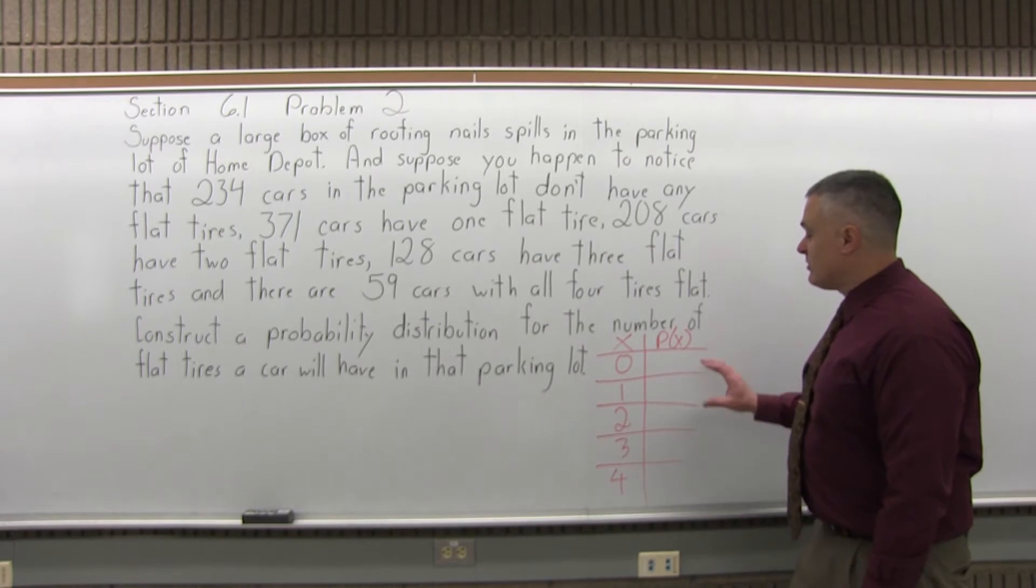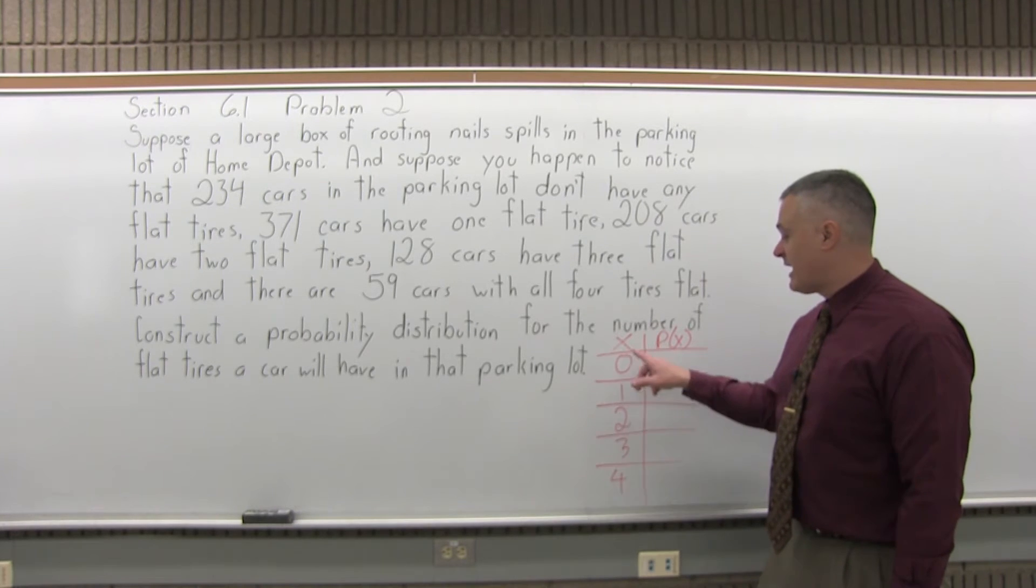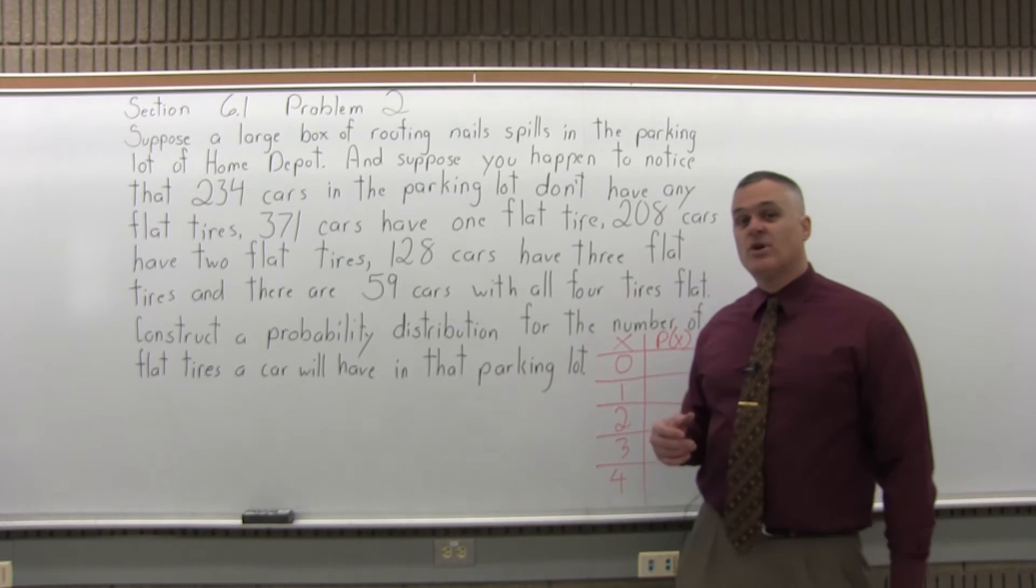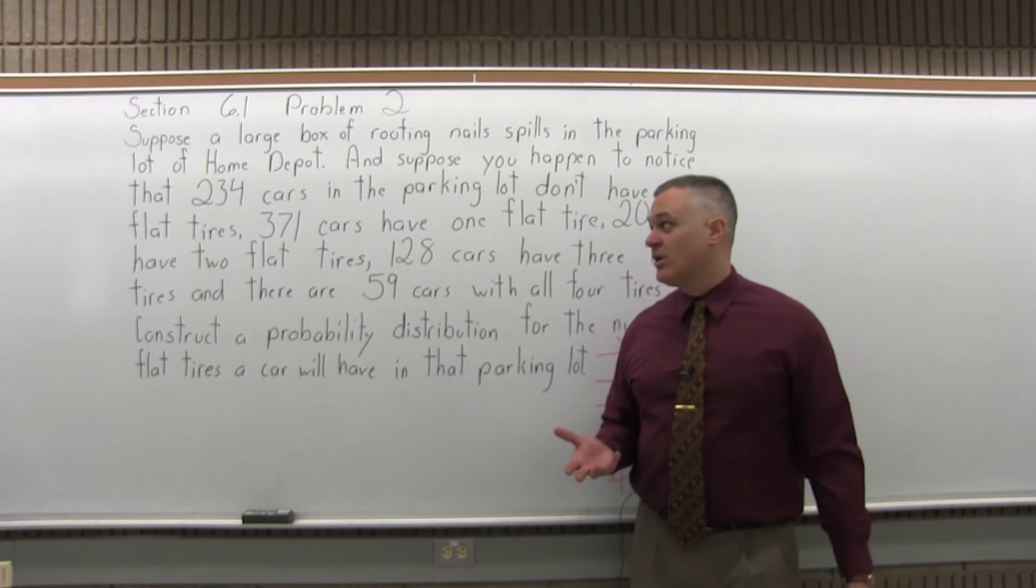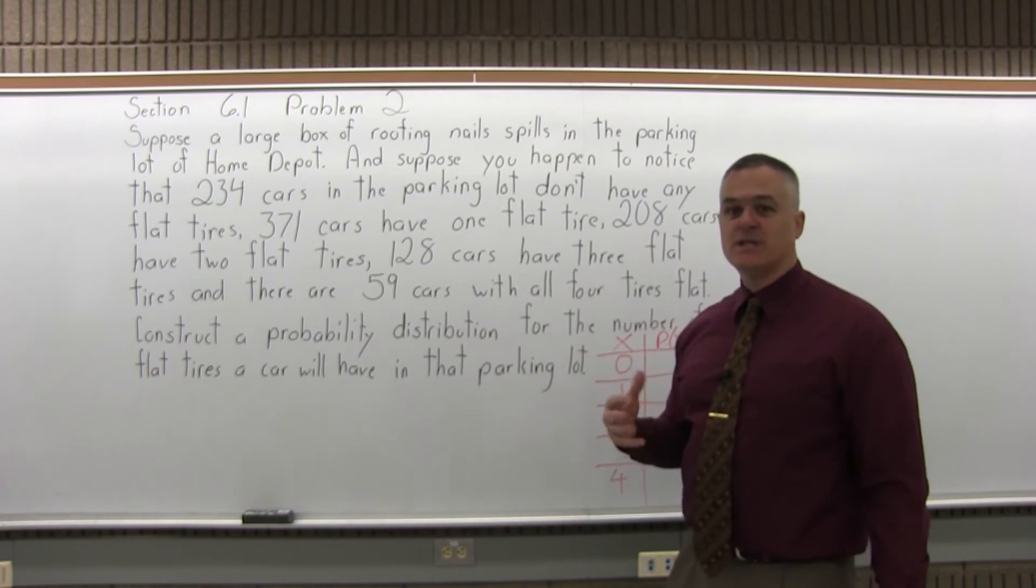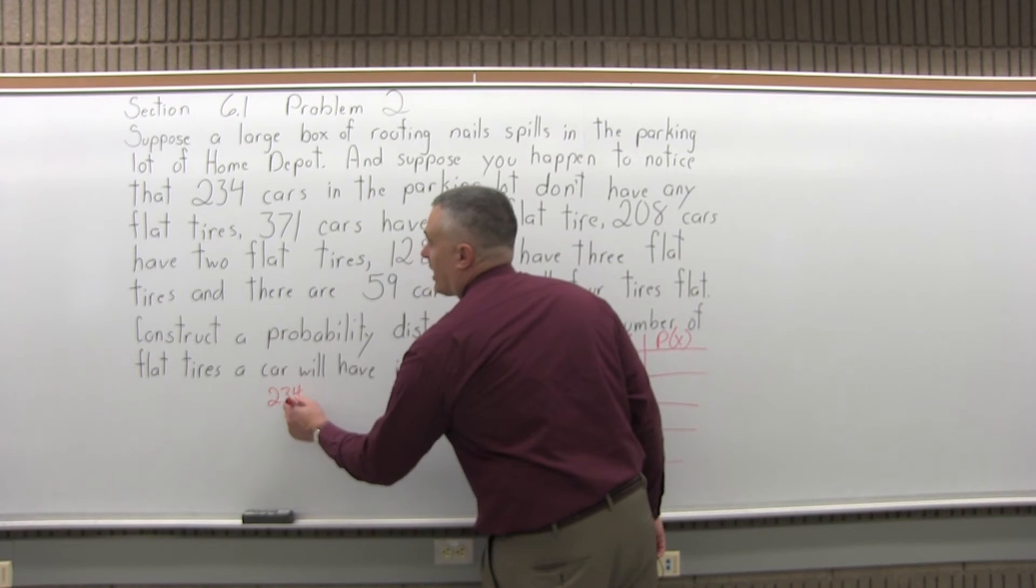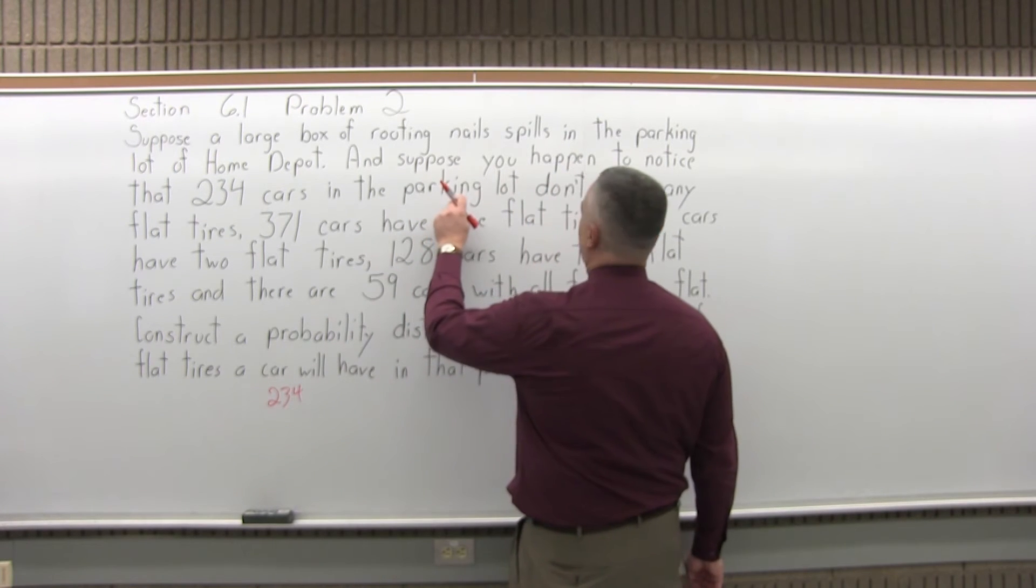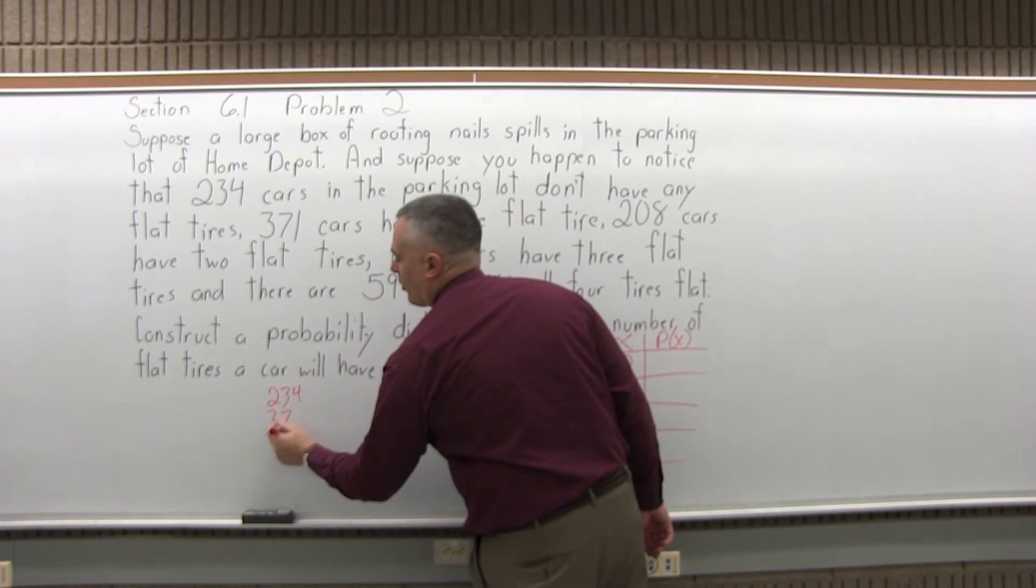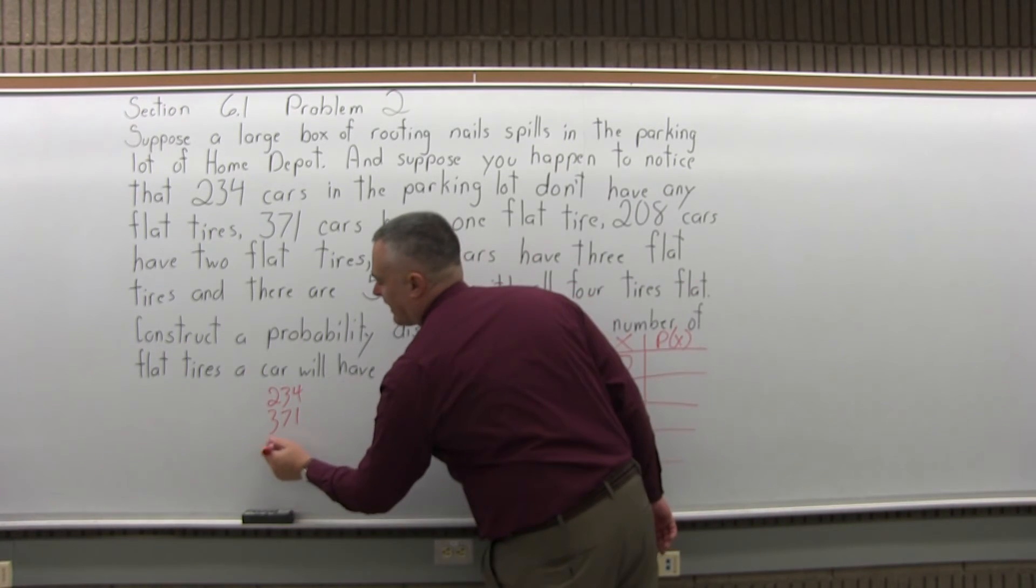Now to finish our probability distribution, we have to put the probabilities of each one of the items from the first column in the second column. To find these probabilities, we have to know how many cars we're talking about altogether. Let's add those numbers up. We had 234 cars that had no flat tire, then 371 had one flat tire, 208 had two flat tires.